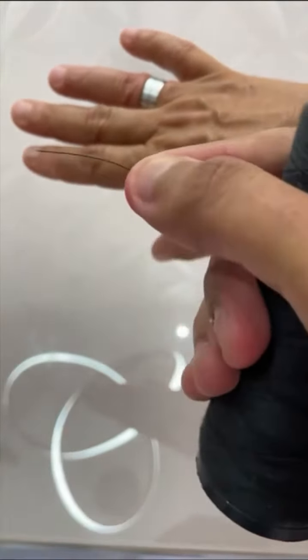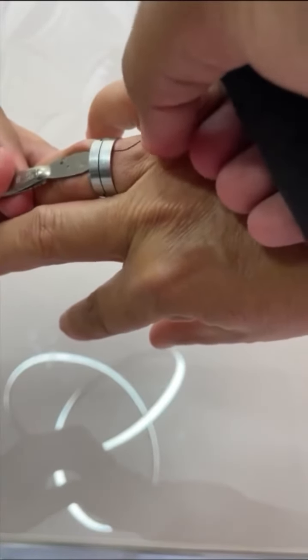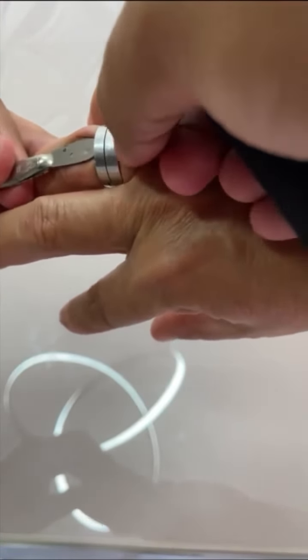We'll need some thread and tweezers. With the help of the tweezers, we'll open the ring's passage a little. Now, pass the thread through the ring.